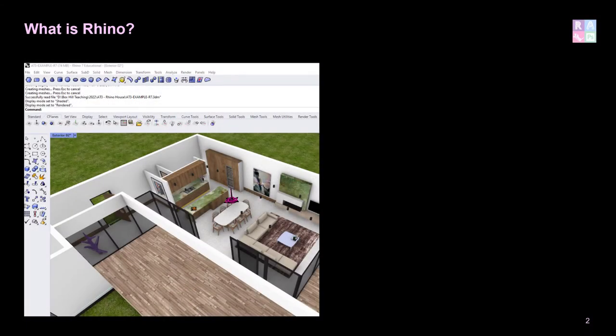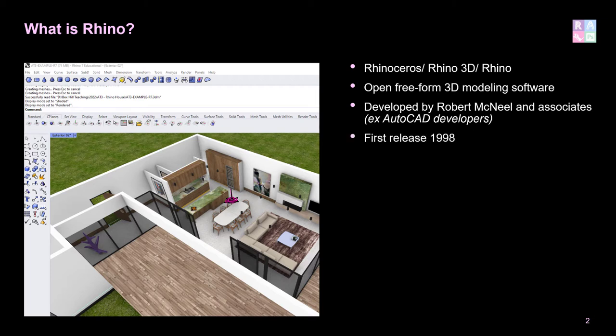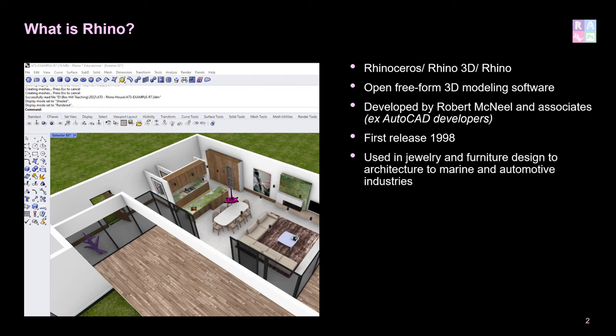Rhino, otherwise known as Rhinoceros or Rhino 3D, is an open freeform 3D modelling software. It was developed by Robert McNeil and Associates, who are ex-AutoCAD developers, so the transition between AutoCAD and Rhino is made easier — the commands are 99% the same. Its first release was back in 1998, and it's used extensively in jewellery and furniture design, architecture, and all the way through to marine and automotive industries. It's really known as the Swiss army knife of 3D modelling.